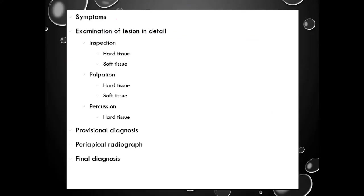First we will record the symptoms, then we will do the local examination. The components of local examination are inspection, palpation, and percussion. In the inspection, we will divide it into two parts: inspection of hard tissue and inspection of soft tissue. In the inspection of hard tissue, we will be examining the tooth of interest that is the tooth which has decayed, and in the soft tissue examination, we will be observing if there are any changes in the soft tissue around the tooth.